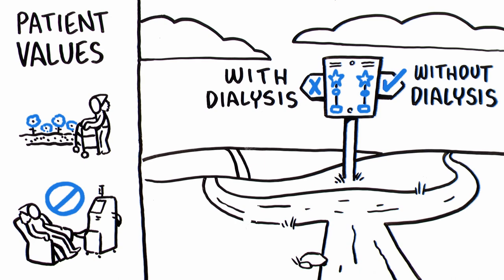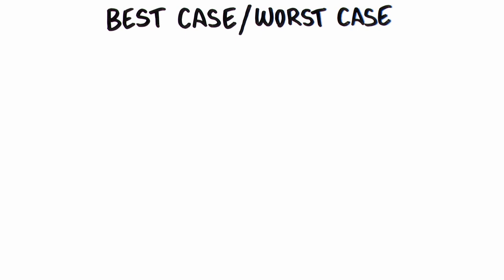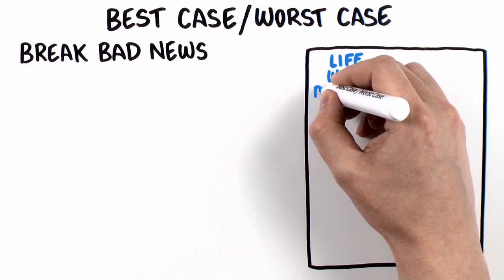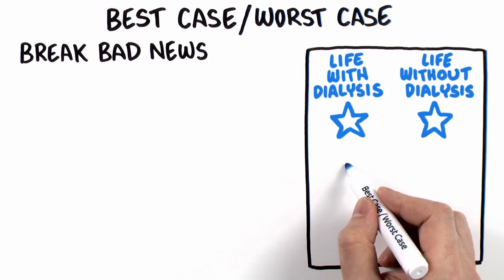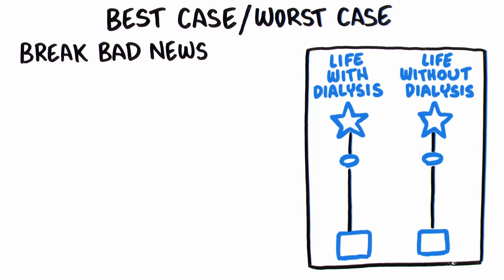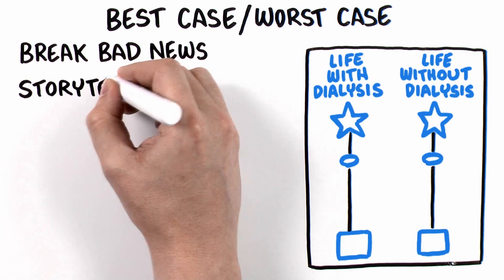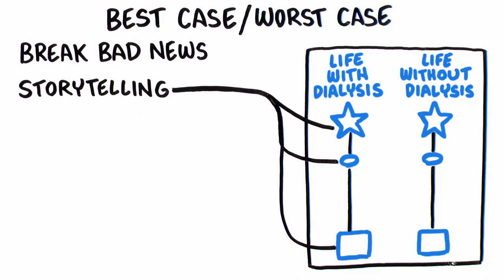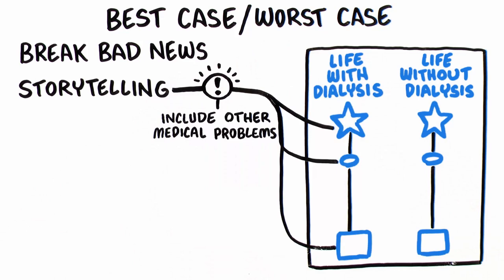Let's summarize. Best case, worst case has the following components. First, break bad news. Then, identify a choice between life with and without dialysis. Create a graphic aid that illustrates the range of plausible stories and share it with your patient. You haven't done best case, worst case, unless you complete this step. Use storytelling to describe the best, worst, and most likely scenarios. Avoid percentages and statistics. Include the patient's other medical problems in your story about how their life will change with or without dialysis. Include survival and quality of life.